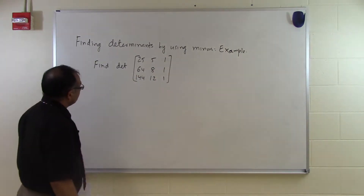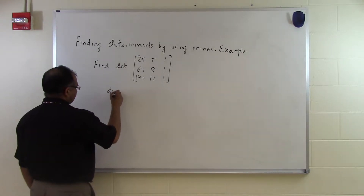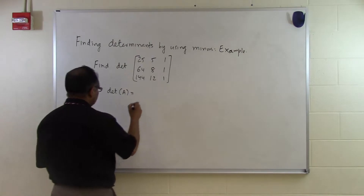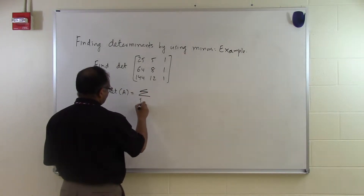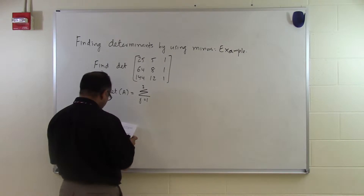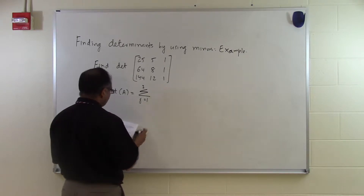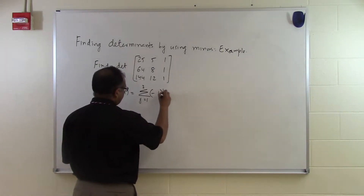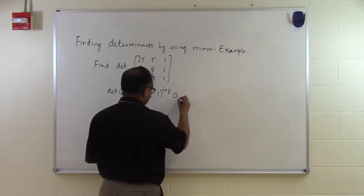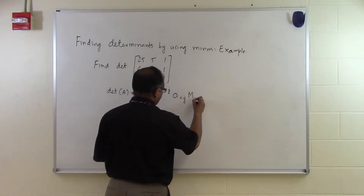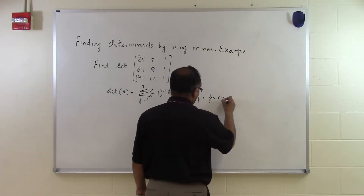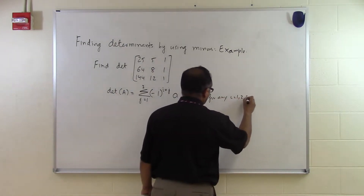The determinant of a matrix is given as, if I'm going to find it in terms of any of the rows, it would be the sum of minus 1 raised to i plus j, times a-sub-ij times m-sub-ij, for i equal to 1, 2, and 3.